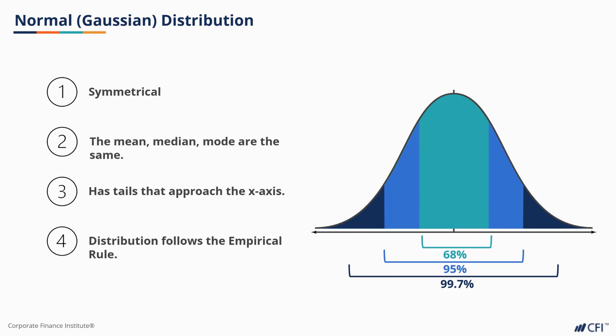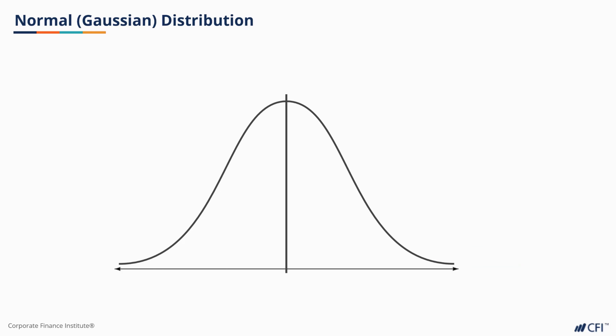We're going to be seeing a lot of the normal distribution, because a lot of statistical tests require that our data is normally distributed. This may sound like a big limitation, but it really isn't. We'll explore why in chapter 3 when we discuss the central limit theorem.